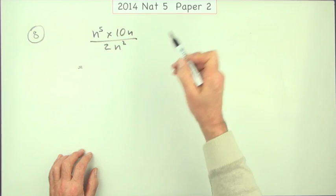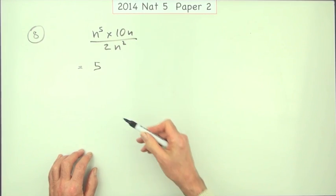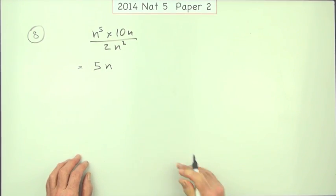So coefficients first. Ten divided by two is five. It's all n's so the final answer must be n to some power.